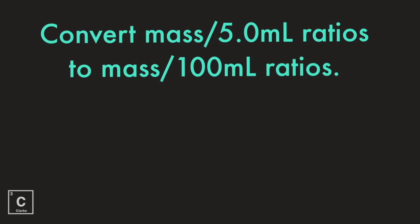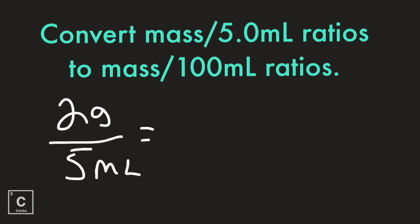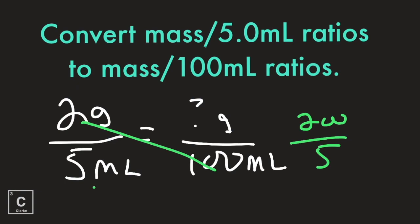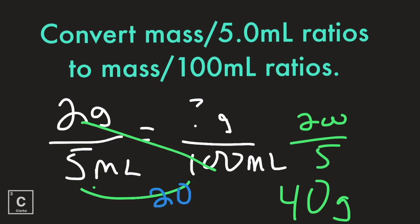Let me show you how to do the first one. So we had 2 grams for 5 milliliters, and I'm wanting to know how many grams per 100 milliliters. We could cross multiply and divide: 200 divided by 5. What did we multiply times 5 to get 100? You would multiply by 20. So instead of having 2 grams per 5 milliliters, we are going to have 40 grams per 100 milliliters.